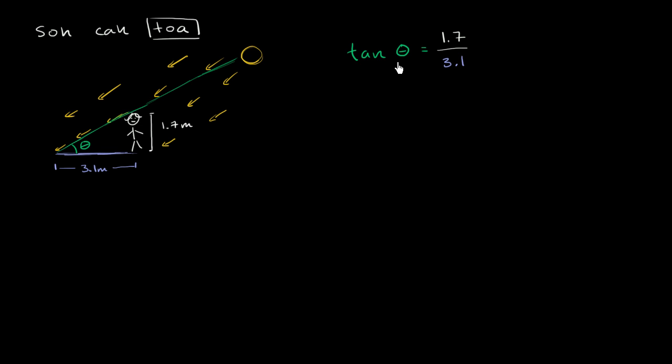So we need to figure out some angle theta in radians where if I take the tangent of it, I'm going to get 1.7 over 3.1. Or another way we could think about it, we could take the inverse tangent function of both sides of this, sometimes called the arc tangent.